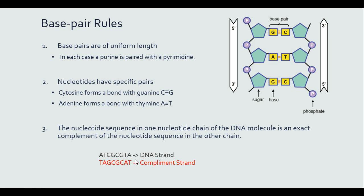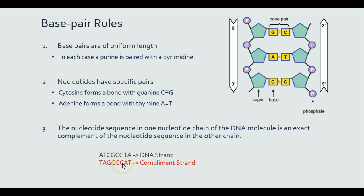We could also show you another strand here. We have a DNA strand: ATCG CGTA. Its complement would be the opposite base pair — for A it's T, for T it's A, C is G, G is C, C is G, G is C, T is A, and A is T.